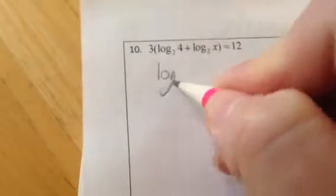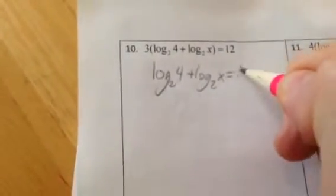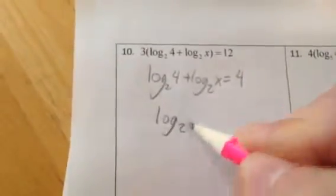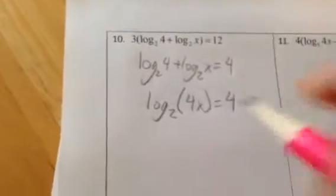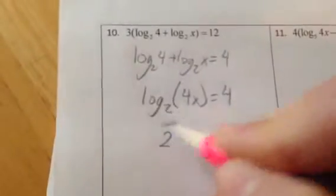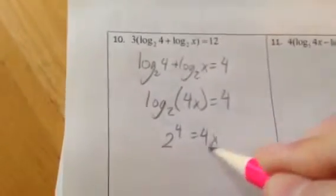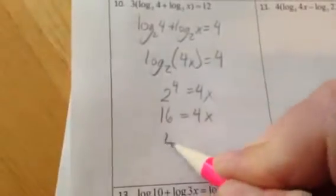So get rid of the 3 first. So we'll have log base 2 of 4 plus log base 2 of x equals 4. Now smoosh these together. They have the same base, so I can multiply the insides. Now undo the log by writing it in exponential form. 2 to the 4th equals 4x. 2 to the 4th is 16 equals 4x. Divide by 4, x equals 4.